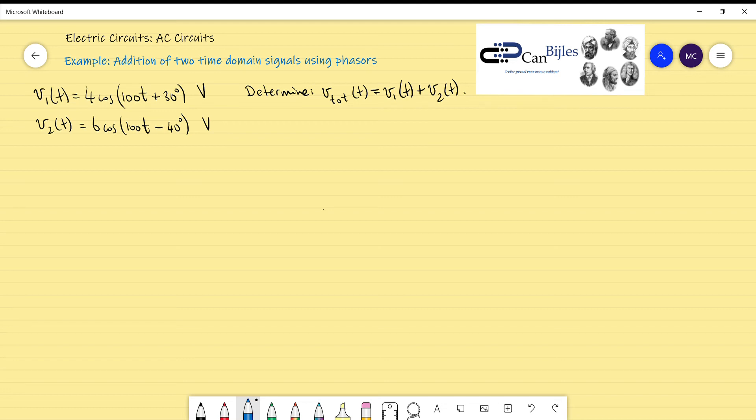Welcome back to this new video. We would like to add two time-domain signals using phasors. Because it is an addition, like said in the previous videos, for addition and also for subtraction we will use a rectangular form of the complex expression.